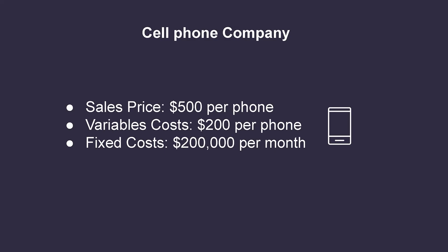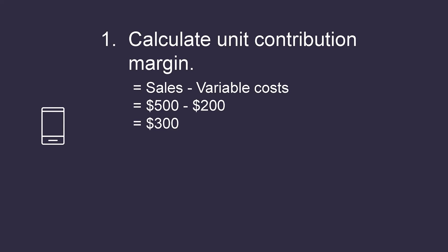Let's look at a brief example of how to calculate a company's unit contribution margin and break-even point. On the screen, you're seeing some financial information for a company that sells cell phones: a sales price of $500 per phone, variable costs of $200 per phone, and fixed costs of $200,000 per month. First, we need to calculate the company's unit contribution margin. By taking the sales price of $500 per phone and subtracting out the variable costs of $200 per phone — which includes things like materials and direct labor costs — this means that for every phone the company sells, they're adding $300 to their contribution margin.